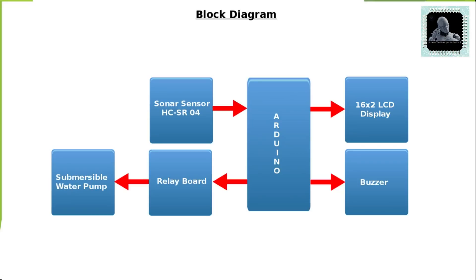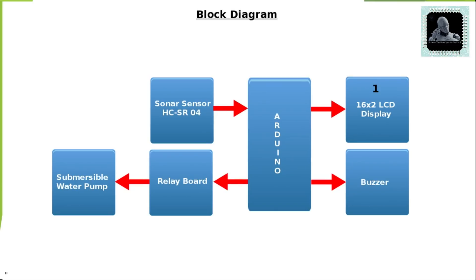Using the given block diagram, the project mainly has six blocks. Let's learn one by one. The first block is a 16x2 LCD display which is the output unit. This will be mainly responsible for displaying the water level and pump status. The second block is the Arduino. This is considered as the brain of this project. This will be controlling and coordinating all the other blocks.